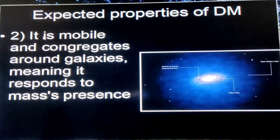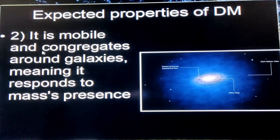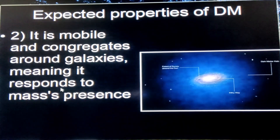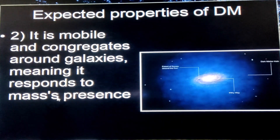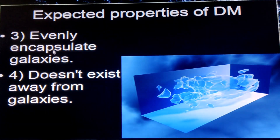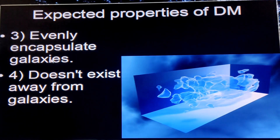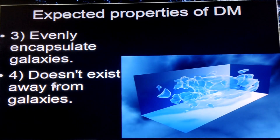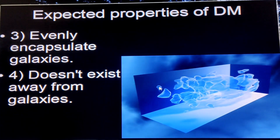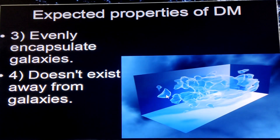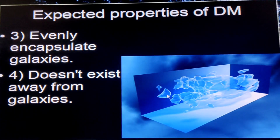Dark matter is mobile — it moves and tends to congregate around galaxies, meaning it responds to the presence of mass or gravity. It encapsulates galaxies and the density is the same throughout. But away from a galaxy, there's no dark matter anymore. In this model, here's a galaxy with the blue part around it being dark matter, and between galaxy groups there is no dark matter.